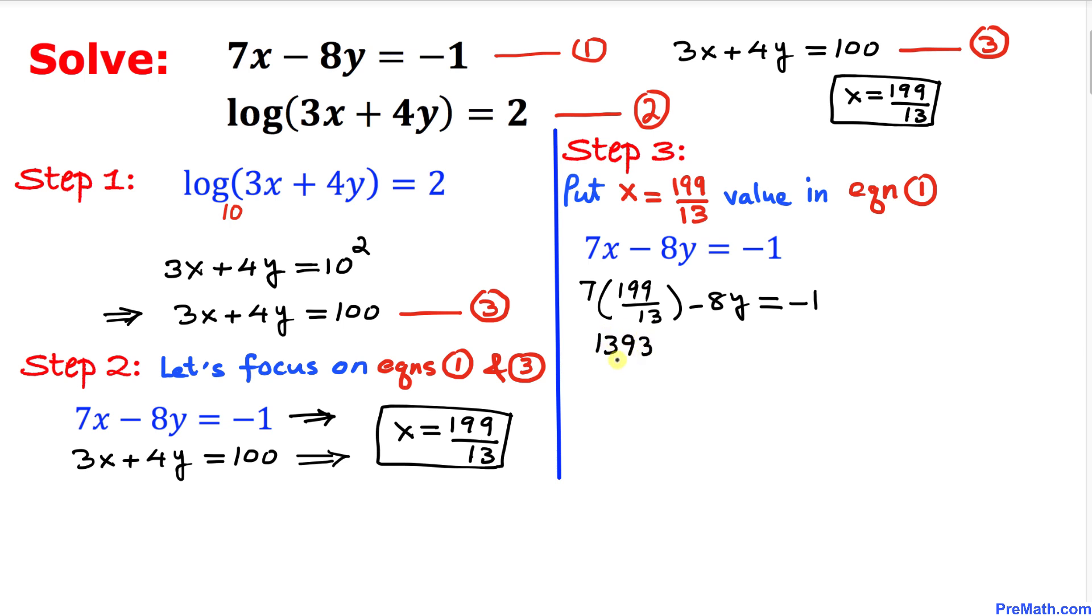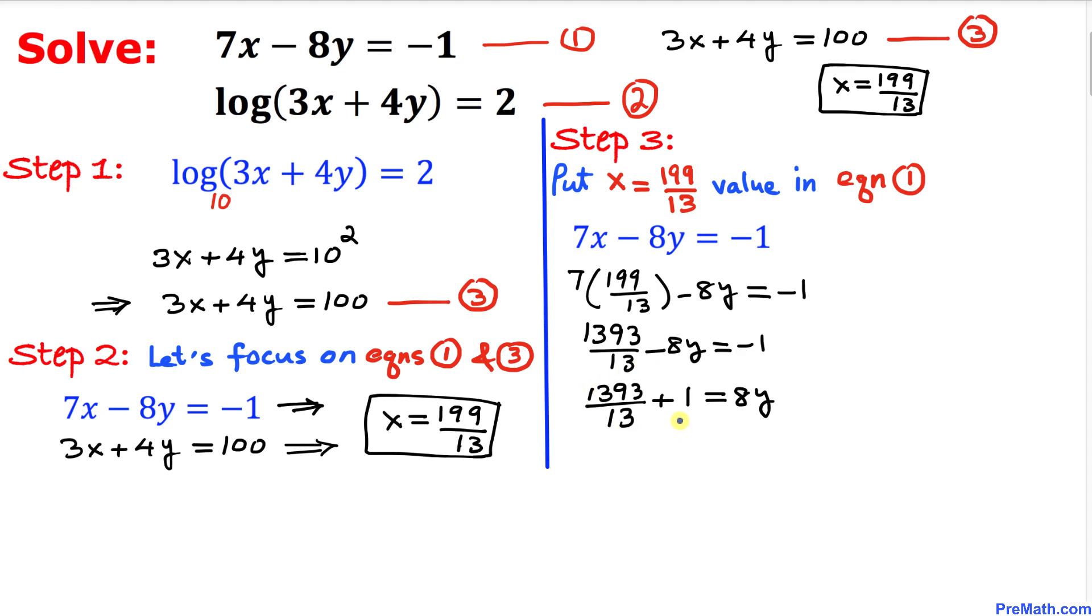1393 divided by 13 minus 8y equals negative 1. Let's move negative 8y on the right-hand side and negative 1 on the left-hand side. Here is our next step.